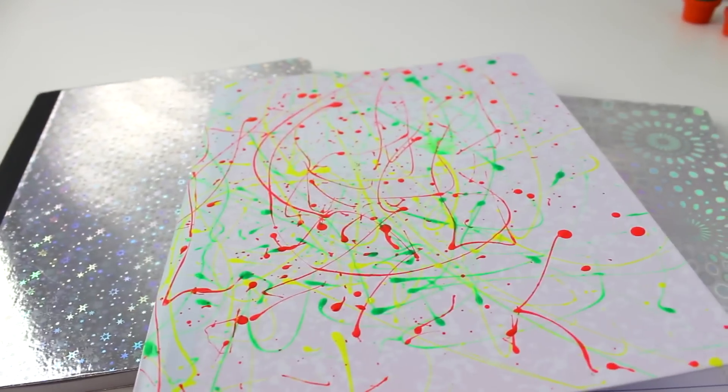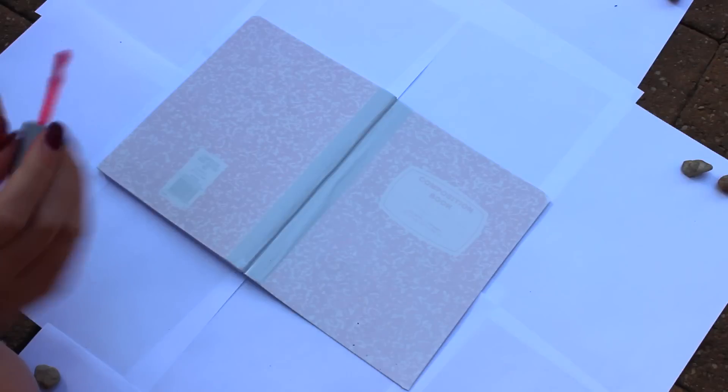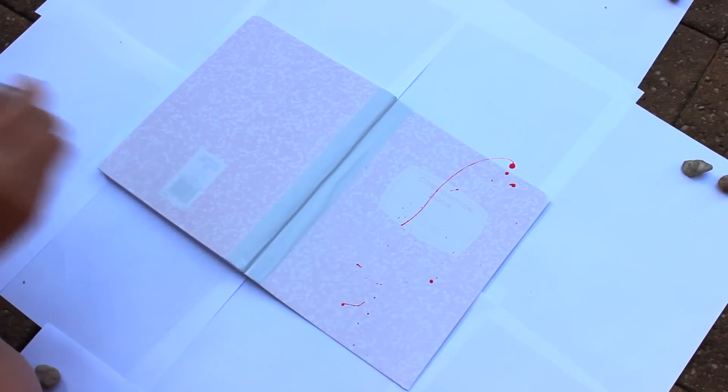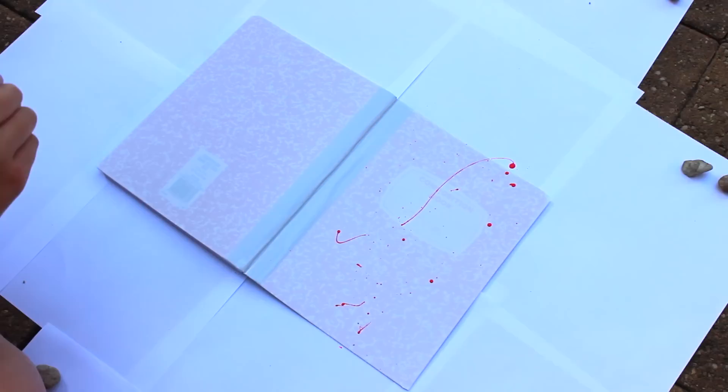Now we are going to move on to the splattered notebook. So what we need is just a white notebook. I could not find a white notebook for the life of me, so I just contacted white contact over a plain notebook which you can still kind of see, but it doesn't matter.